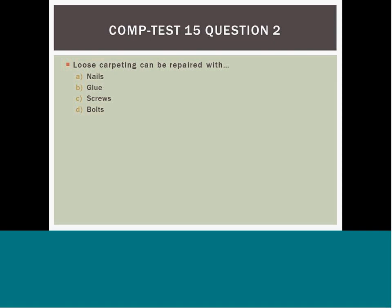Question 15: A split ceiling tile can be repaired with A) a nail, B) glue, C) scissors, or D) bolts. Answer D — glue — is correct, because you are not going to be able to drive fasteners such as nails, screws, or bolts into the ceiling tile material.